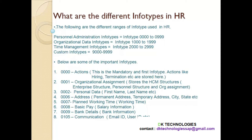These are some of the important info types used in personal administration — make note of these, they are really important in any project. The first info type is 0000, which is called Actions. This info type is mandatory and the first info type. It captures actions like hiring, termination, etc. When you hire an employee it is an action, when you terminate an employee it is an action — those kinds of actions will be stored in this info type.